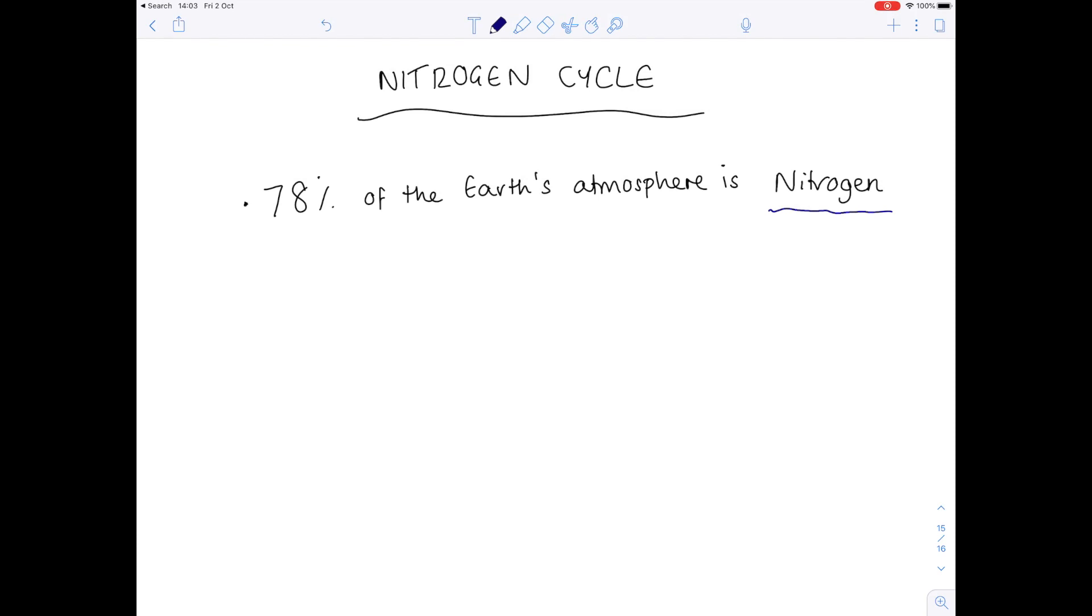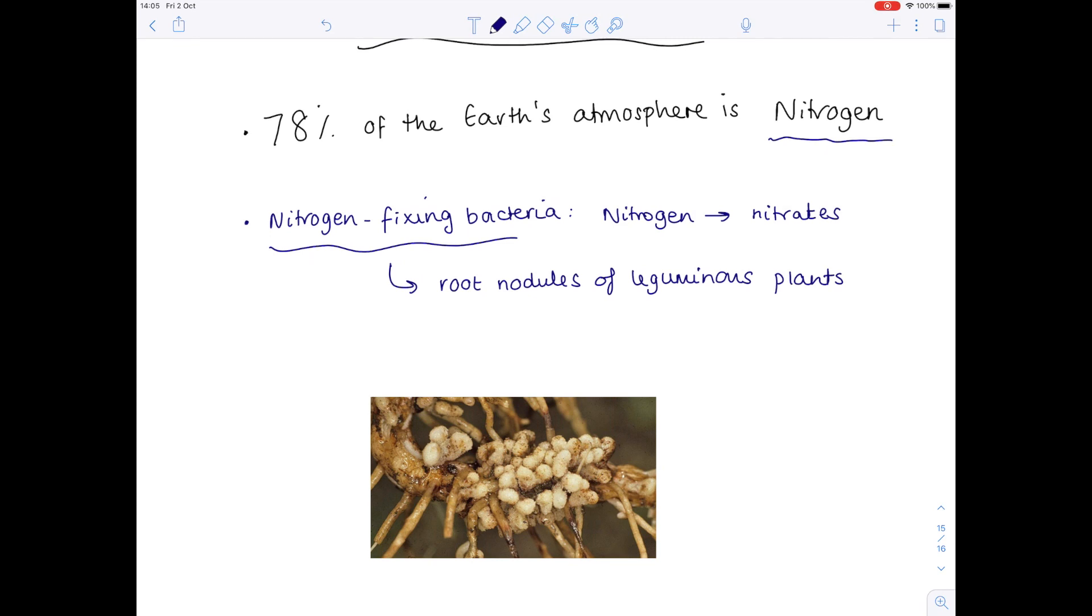Well, the crucial first step is that it must be chemically processed by nitrogen fixing bacteria. They take that nitrogen in the air and convert it into nitrates which are added to the soil. Where do we find nitrogen fixing bacteria? They're found on the root nodules of leguminous plants, and here's a picture of a leguminous plant with these very characteristic nodules.